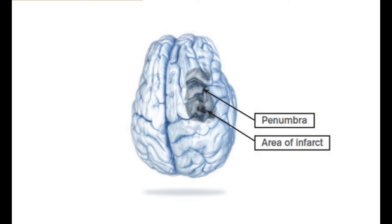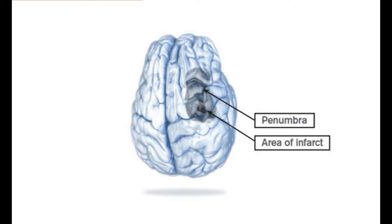So why do we say we have a time frame of 3 to 4.5 hours to get them in? It's because of the area around the infarct called the penumbra — the area of still viable and salvageable tissue that, if we can reperfuse with TPA, we can still save. The 3-hour window has been approved by the FDA, and the 3 to 4.5-hour window is suggested by the 2015 AHA guidelines.